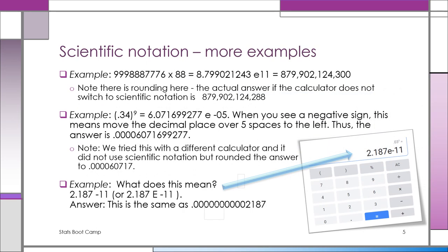Oh, more examples. 999,888,776. That's a large number. But then we're making it even bigger by multiplying it by 88. That extremely large result would be expressed in scientific notation by 8.799021243, e11, or plus 11. And again, since it's so many digits and there was really no room for it in the calculator, there's rounding. A computer would probably be a better idea here.